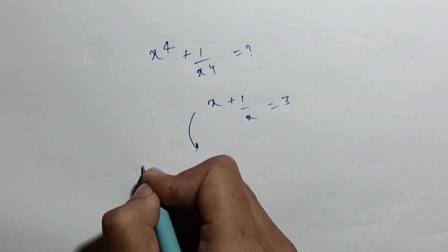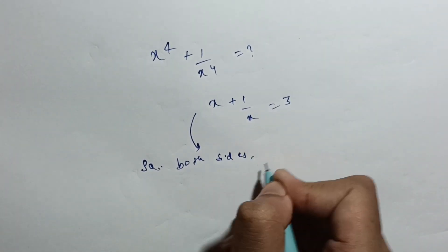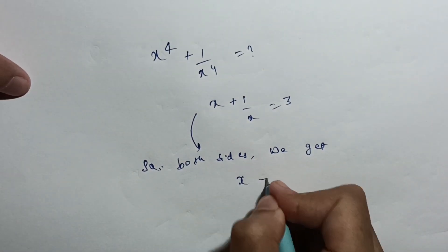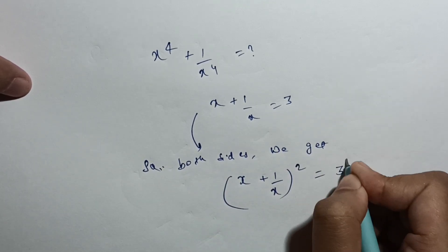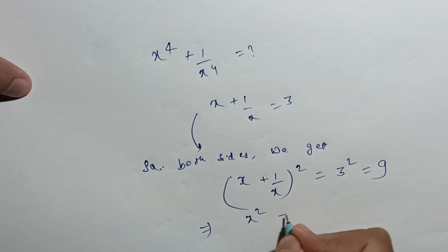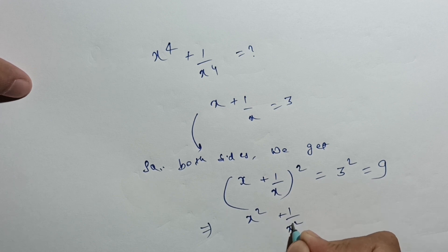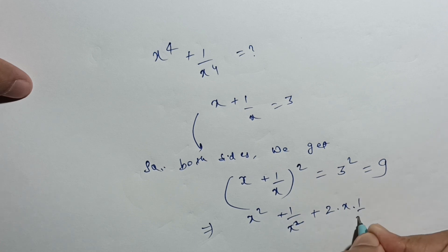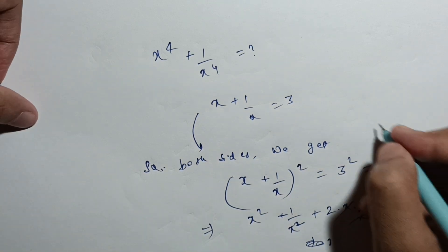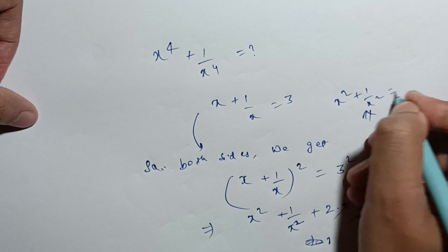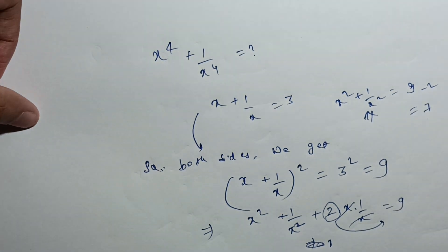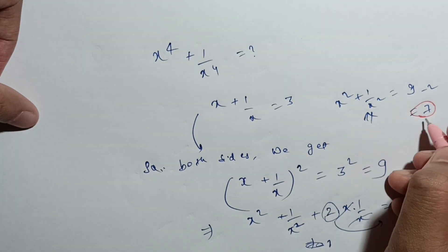Let's square both sides of x plus 1 by x equal to 3. Squaring gives x plus 1 by x whole square equal to 9. Using the formula a plus b whole square equals a square plus b square plus 2ab, I get x square plus 1 by x square plus 2 equal to 9. The 2x times 1 by x cancels to 2, so x square plus 1 by x square equals 9 minus 2, which is 7.